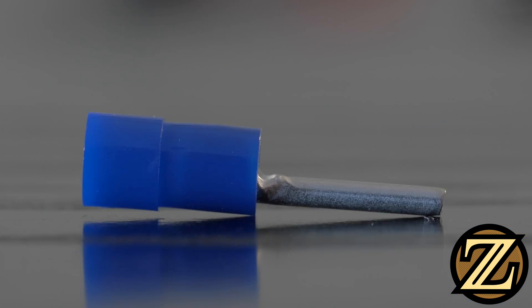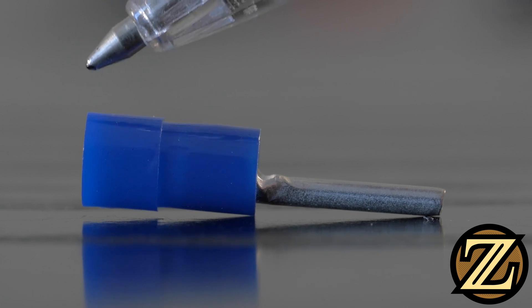If you have an insulated terminal like this one shown here, you will notice a ridge in the plastic. What this ridge denotes is everything on this side of the ridge is going to be metal that crimps to the copper wire, and everything on this side of the ridge is just going to be where the insulation of the wire rests for strain relief.